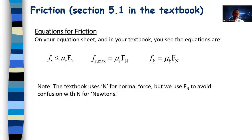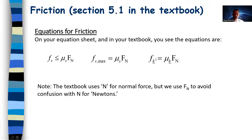Static friction will be whatever it needs to be, up to a point — up to the maximum given by mu S times F sub N. It can be as big as that, but it can also be smaller. Then we have kinetic friction: F sub K equals mu K times F sub N. Kinetic friction is easy to deal with because it doesn't have that ambiguity of 'less than or equal to' — it's simply equal to that amount.